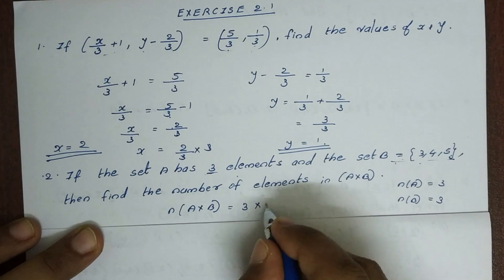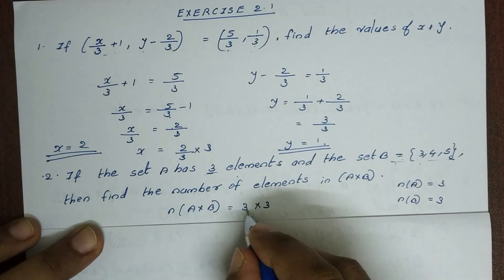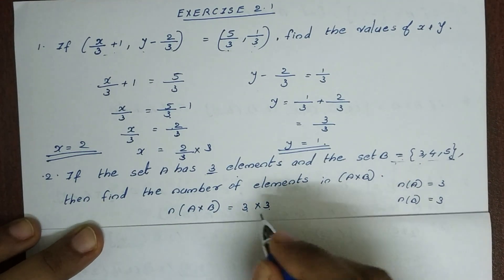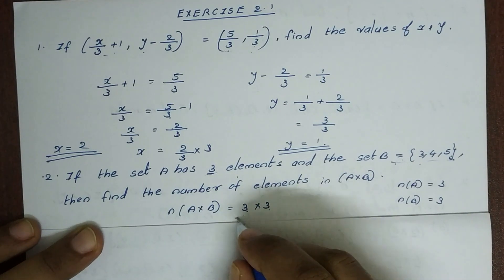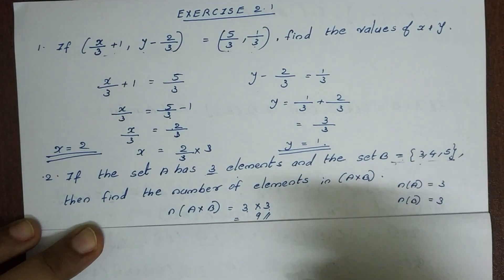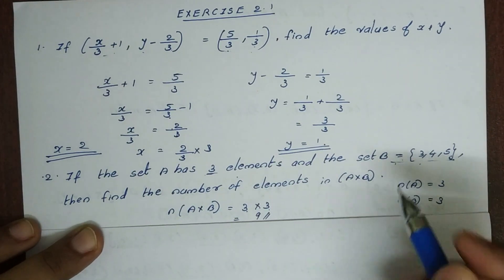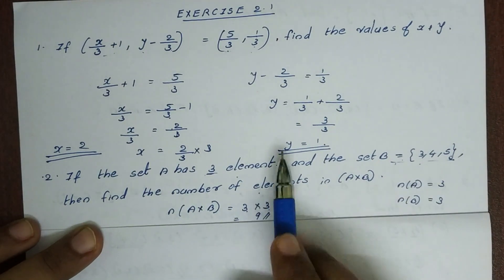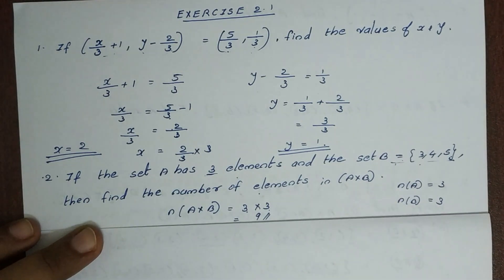The number of elements in A×B: A has 3 elements and B has 3 elements, so A×B has 9 elements. These 9 elements are ordered pairs.